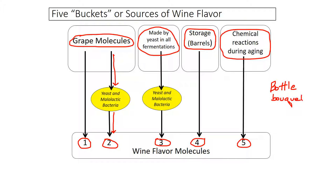If we drink a wine young we don't necessarily get much benefit of bucket number five, but we may get some. The aging decisions that a winemaker will make primarily have to do with the time in the barrel — bucket number four — and then also the time in the bottle before release.